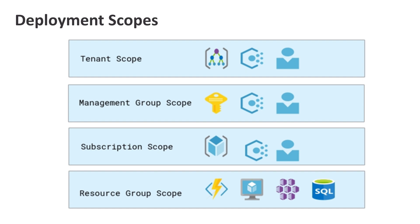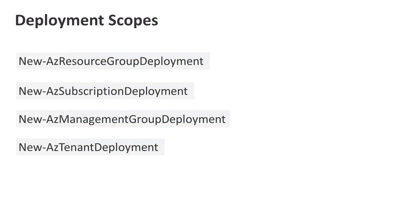To actually deploy at different scopes, you don't really make any change to the template itself. Resources in your ARM template are the same as they've always been — you just use a different type. So if you're looking to deploy a resource group, you'll create a resource group type. The scope is defined by how you run the template; when you trigger a deployment, you define the scope of the deployment. That's done by the command you run. We're going to look at the PowerShell commands, but the same holds true in CLI.